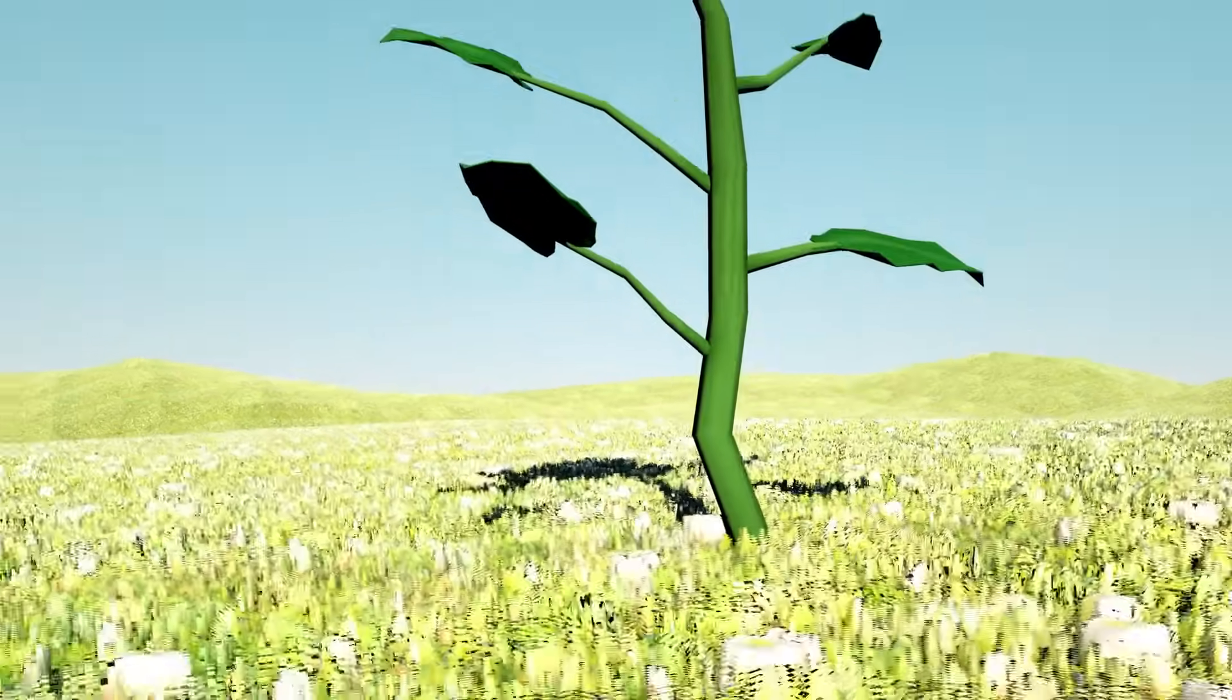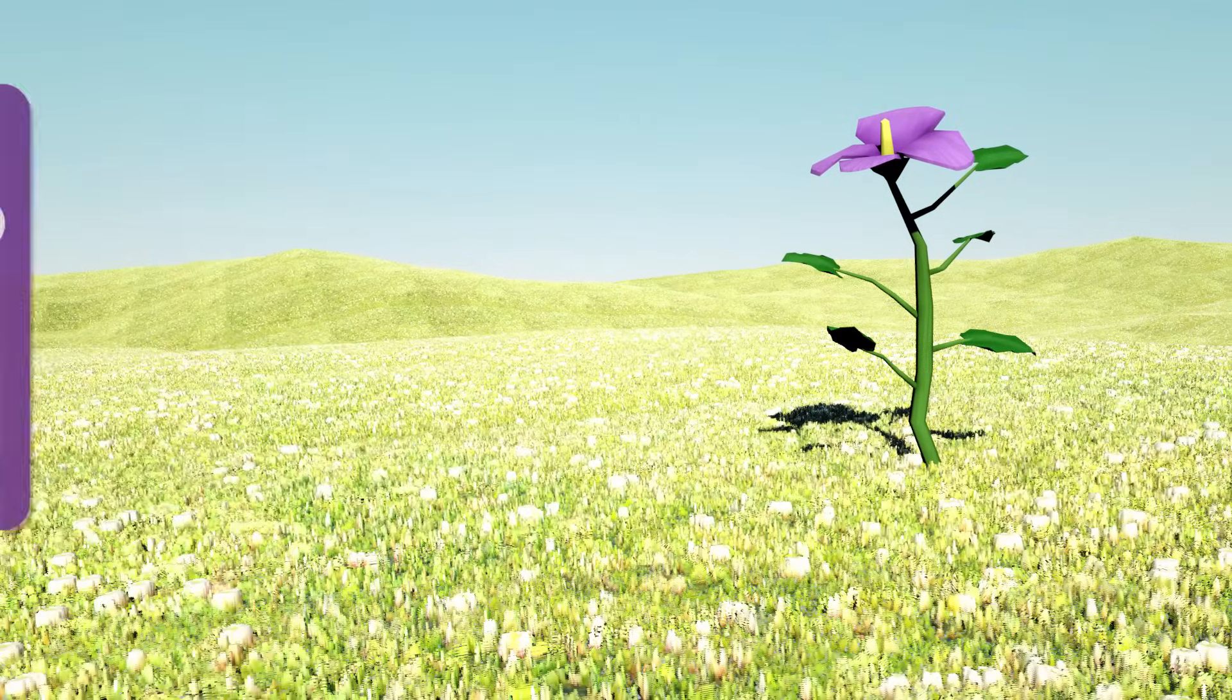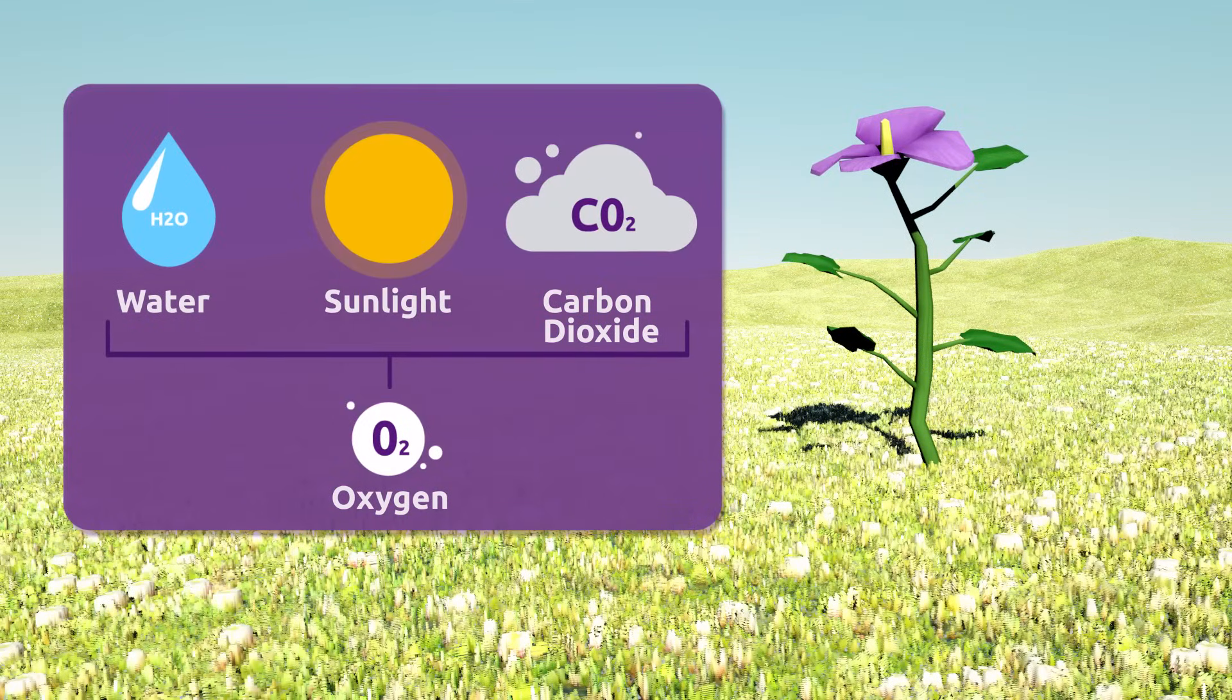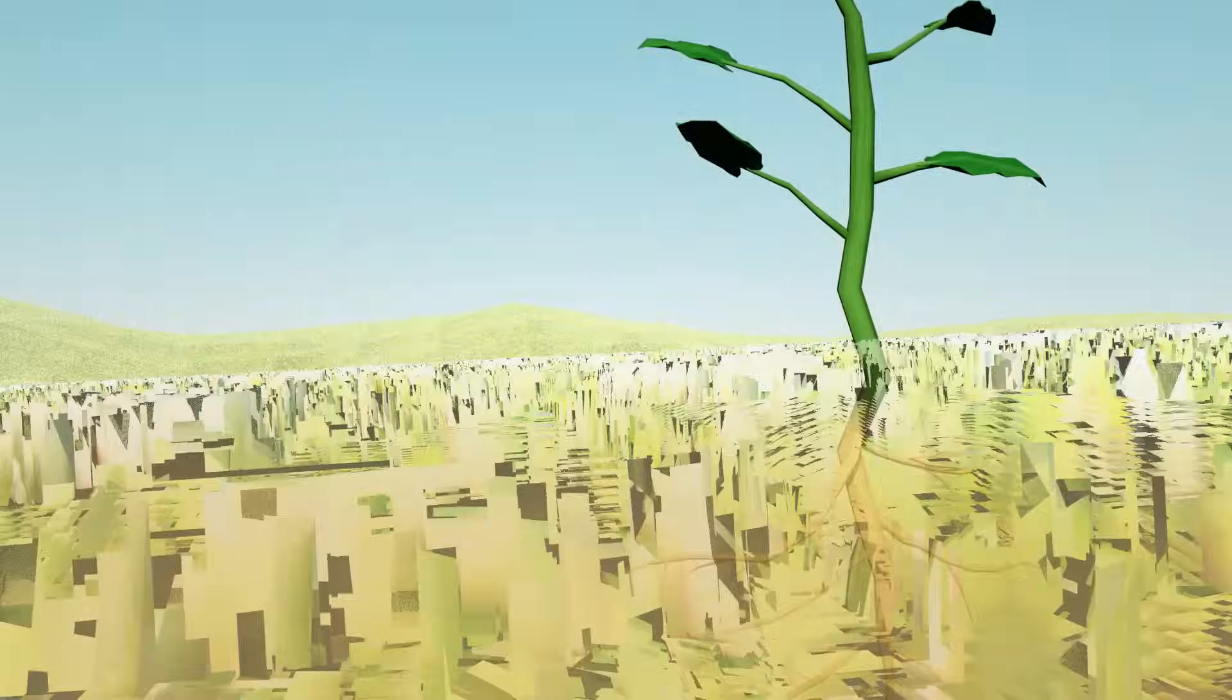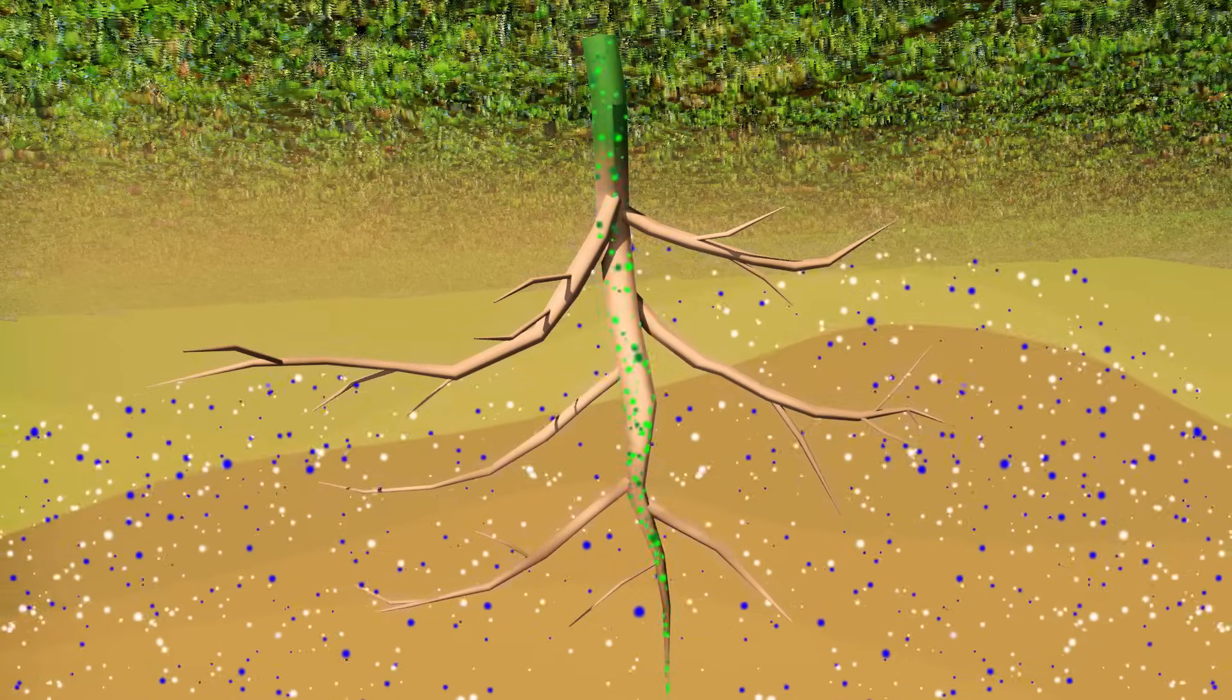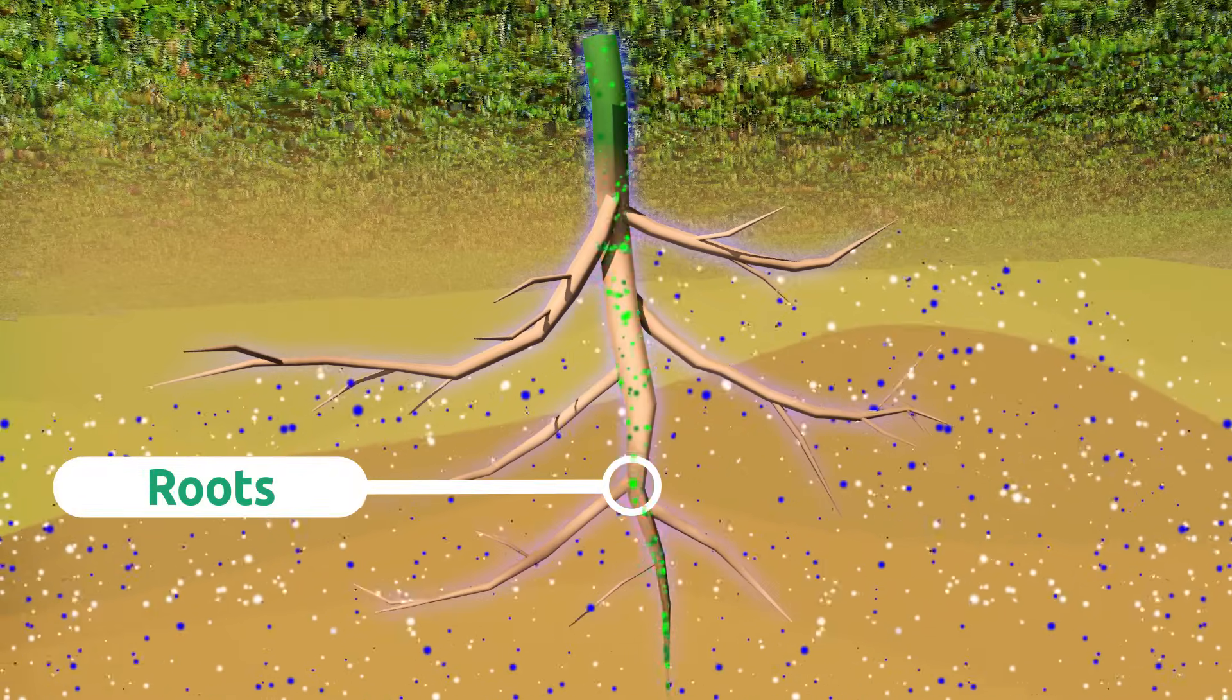During this process, plants transform water, sunlight, and carbon dioxide into oxygen. The photosynthesis cycle starts with plants absorbing water and mineral salts from the soil through their roots.